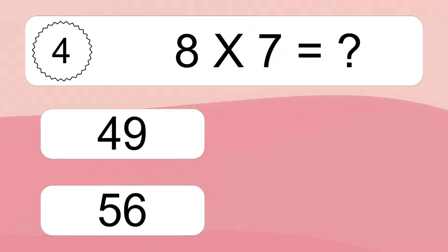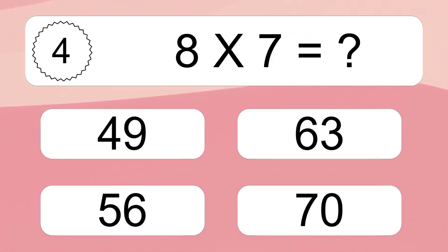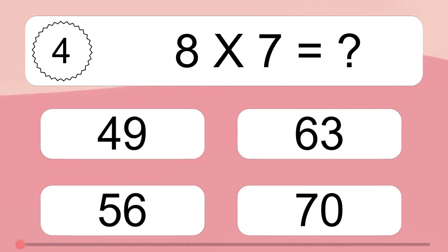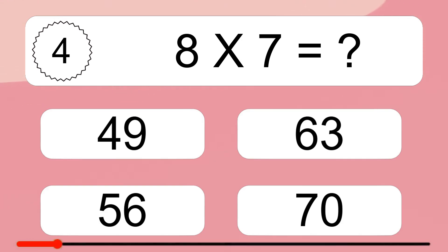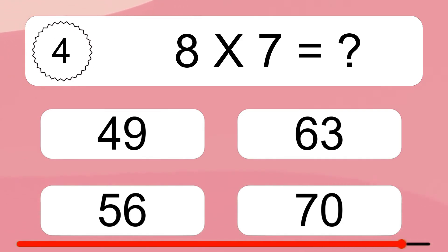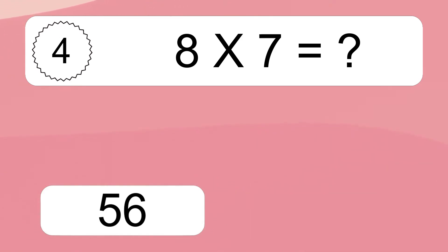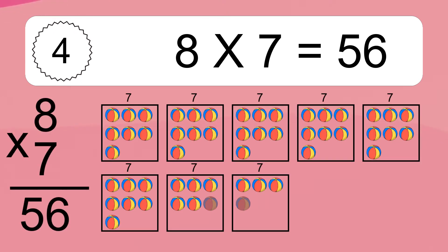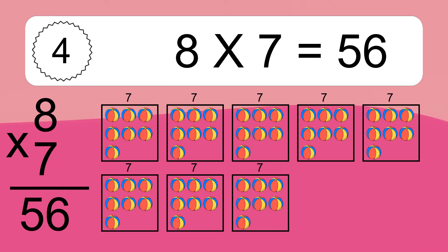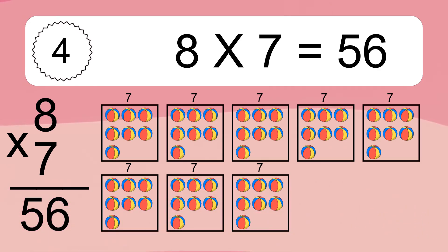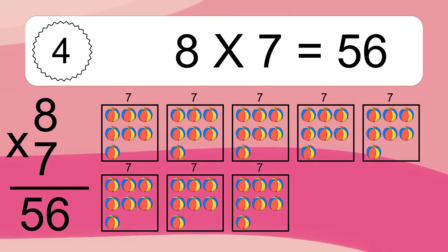8 times 7 equals what? We have 8 boxes, and each box has 7 colorful balls inside. If you count all the balls in all the boxes together, you will have 8 times 7 balls. This equals 56 balls.